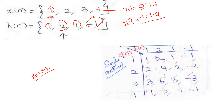The convolution result's time sample range n3 is determined by the rule: the minimum of n3 equals min(n1) + min(n2), and the maximum of n3 equals max(n1) + max(n2). Here, min(n1)=0 and min(n2)=-1, so the starting index is -1. Max(n1)=3 and max(n2)=2, so the ending index is 5. Therefore the convolution result spans from -1 to 5, with increment 1 as required for discrete signals.